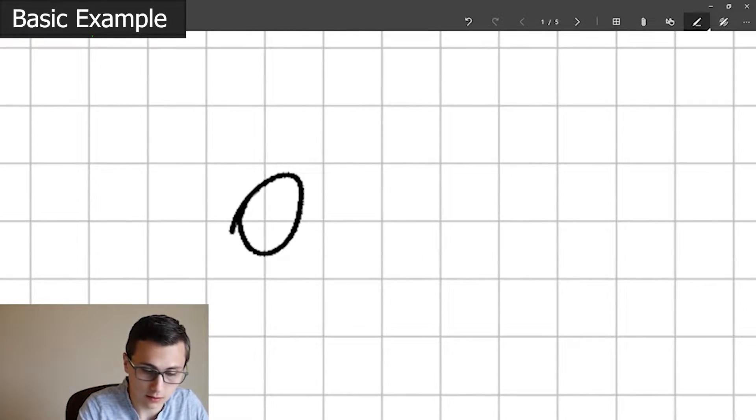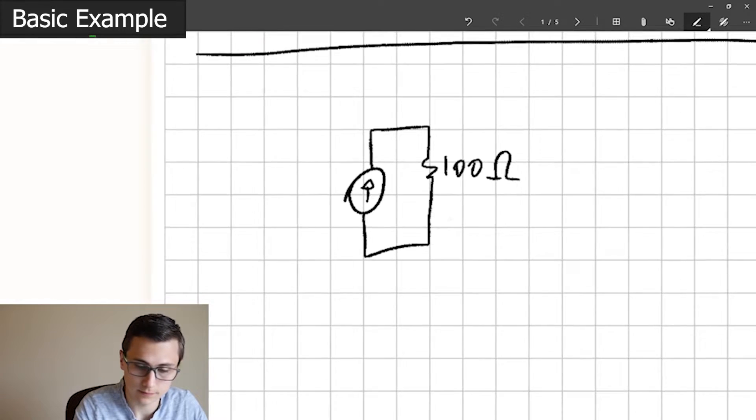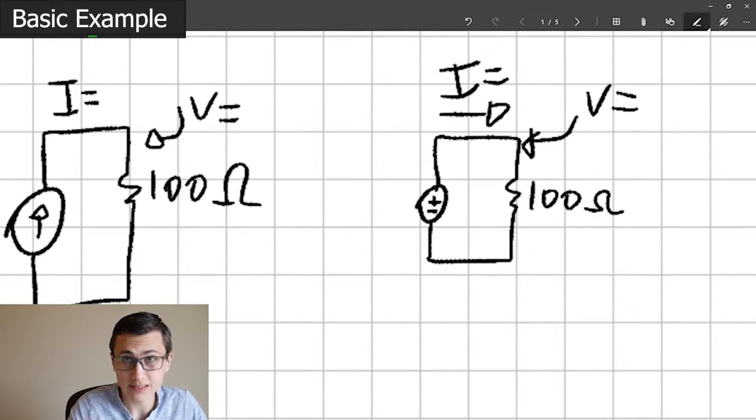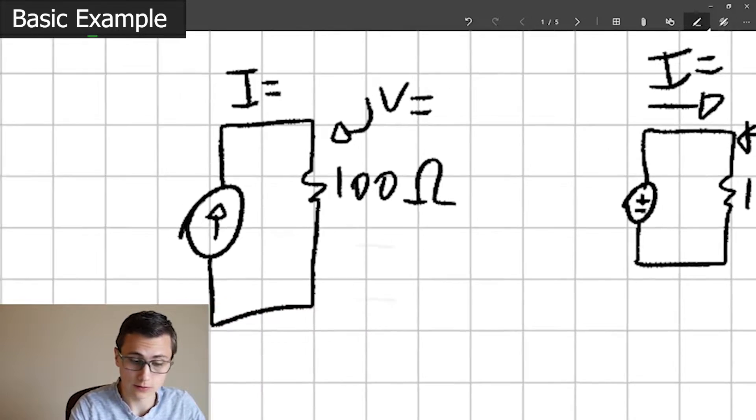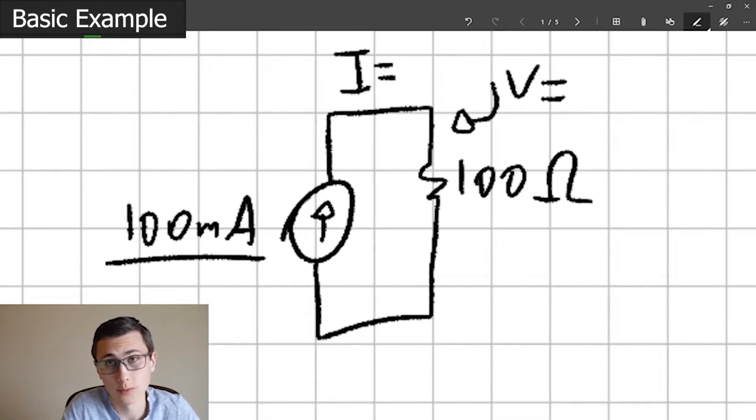What we're going to do is we're going to take our current source and add a 100 ohm load. We're going to do the same thing for our voltage source. So let's say we've got a current source - that's the focus today. Let's say this is 100 milliamps, 100 milliamps through a 100 ohm load.